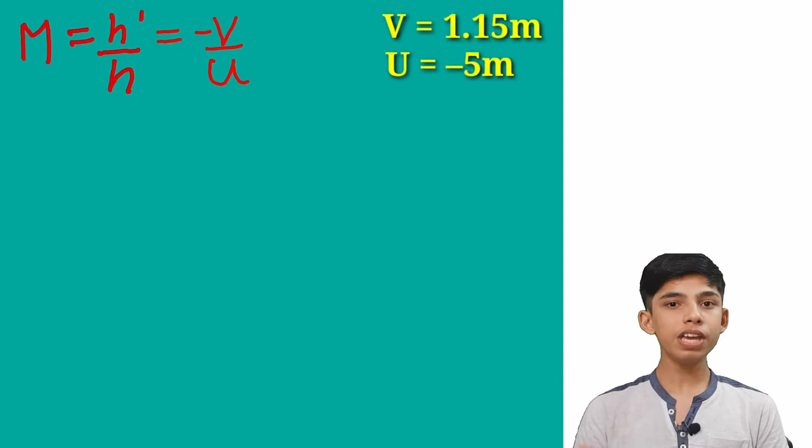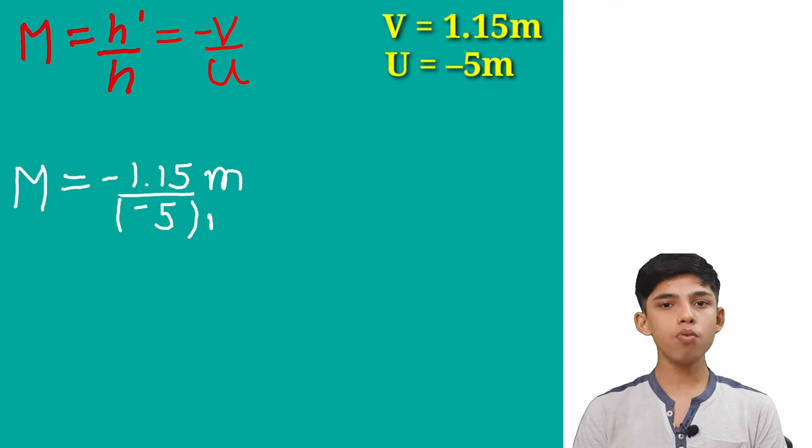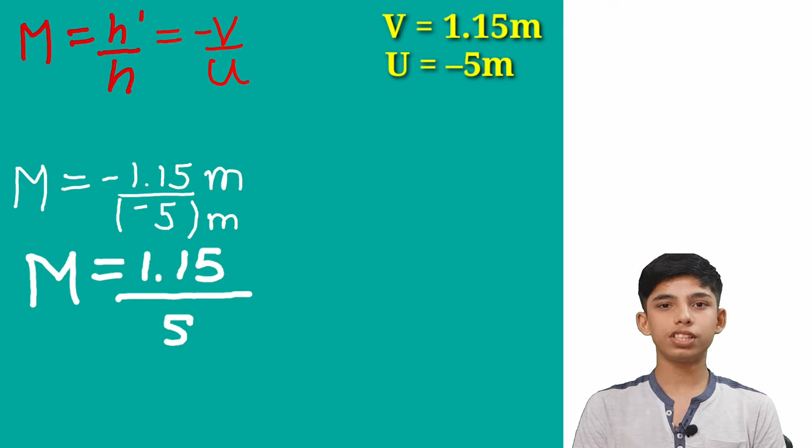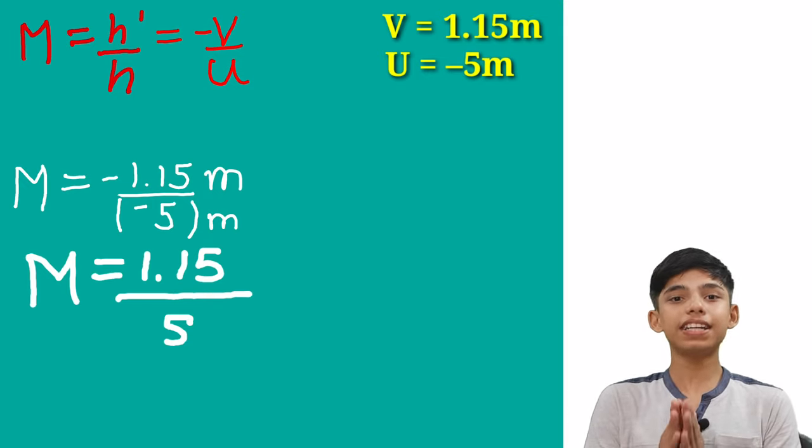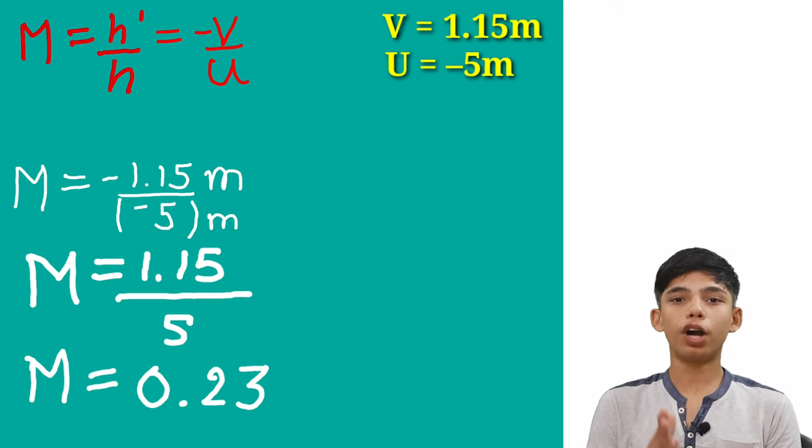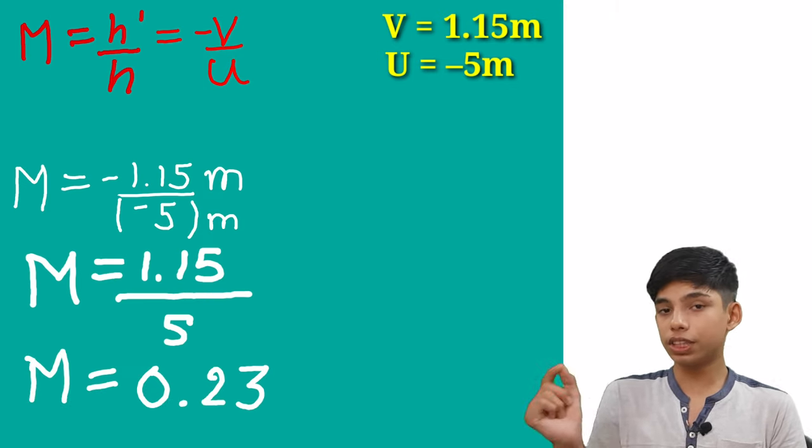So in the place of V, we gonna write 1.15 and in the place of U, we gonna write minus 5. Now these two signs are going to cancel out each other. And now we can just simply divide it and get our answer as 0.23 and this value is going to be positive.